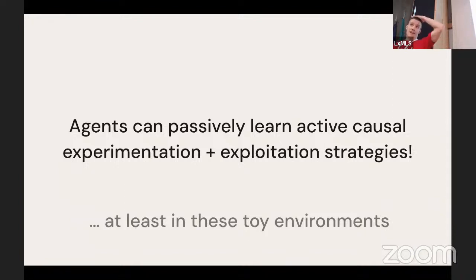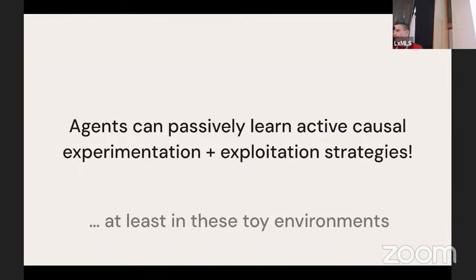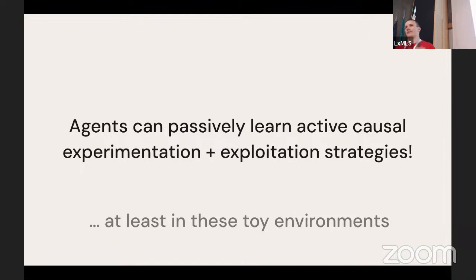Regarding the question of whether this differs from navigation where you stitch together path segments: the training/testing split is such that you can't stitch together causal structures seen in training to capture all causal structures seen at test time. There's never a direct dependence between D and E in training, but there is at test time, so it can't simply be path stitching.